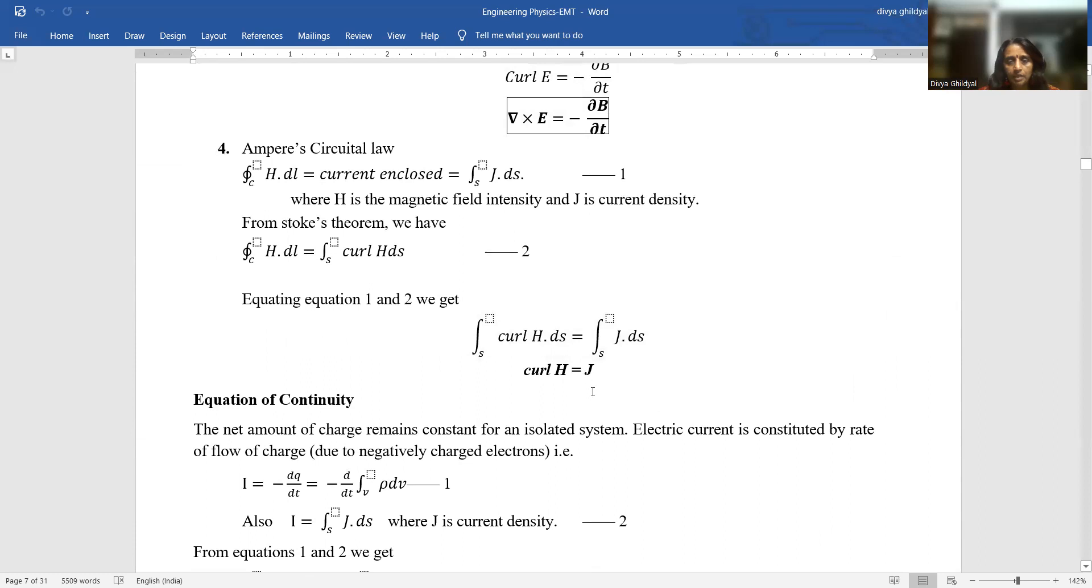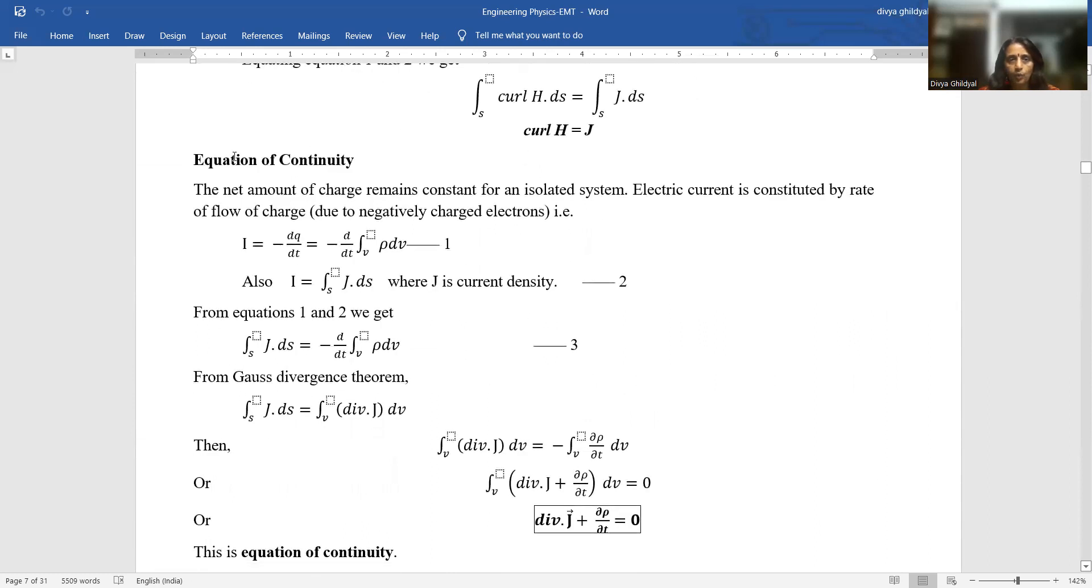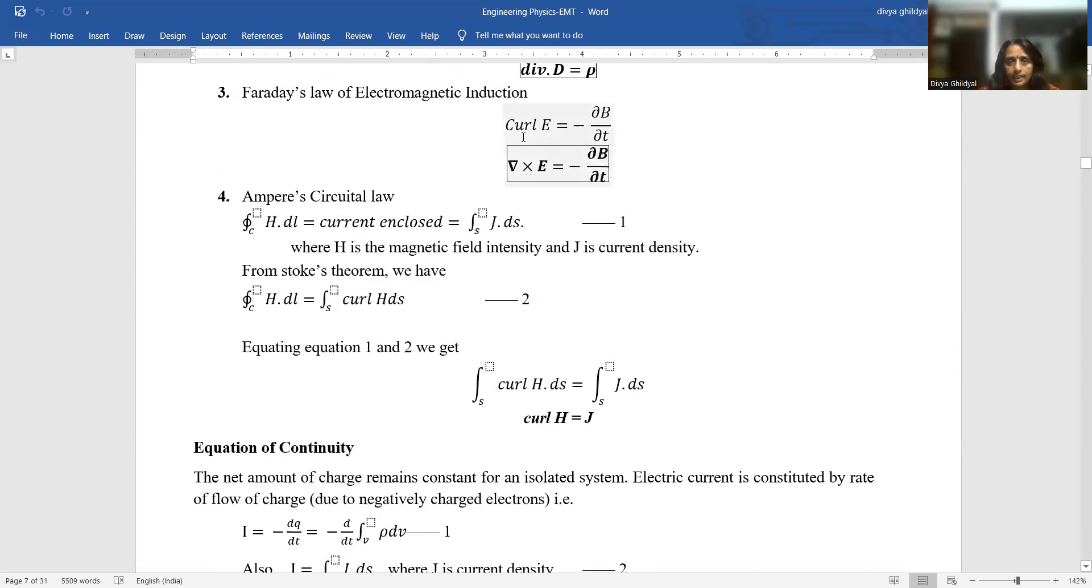Now you will be modifying them accordingly as you move ahead with the theory. Now your syllabus - the first heading is equation of continuity. That means the charges should be flowing in a continuous manner. They should not be static. Why? Because see here in this expression, what am I saying? A changing electric field is giving rise to a changing magnetic field. If this change is not there, magnetic field will not develop and vice versa.